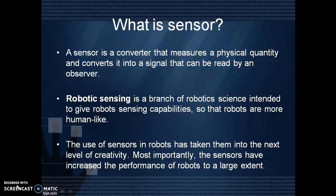So what is a sensor? A sensor is a converter that measures the physical quantity and converts it into a signal that can be read by an observer. Robotic sensing is a branch of robotics intended to give robots sensing capabilities so that robots are more human-like. Robot sensing mainly gives robots the ability to see, touch, hear, and move, and uses algorithms that require environmental feedback. The use of sensors in robots has taken them to the next level of creativity, and most importantly, the sensors have increased the performance of robots to a large extent.